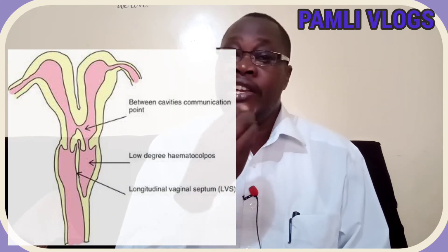Imperforate hymen — meaning the hymen spans all around the vagina without any small hole to allow blood to flow outside the vaginal area — normally occurs earlier but is experienced by these females when they reach puberty and start having menstrual flow. When blood accumulates with no outlet, the patient starts experiencing those signs and symptoms: majorly pelvic pain, abdominal distension, and vaginal discharge.